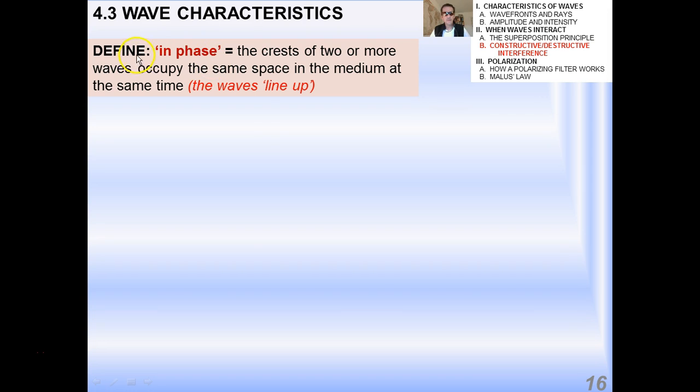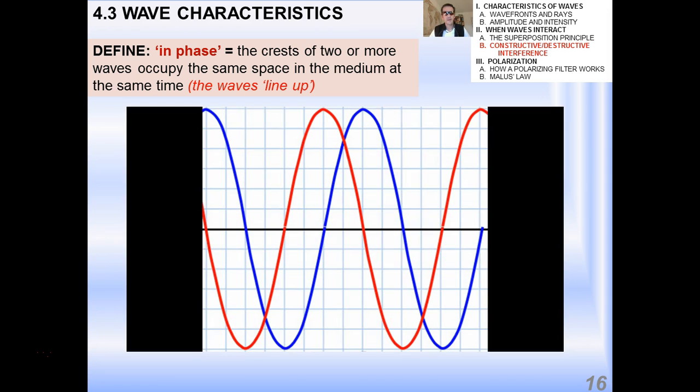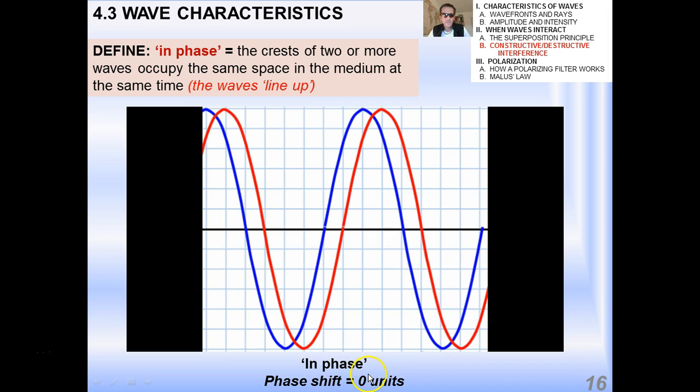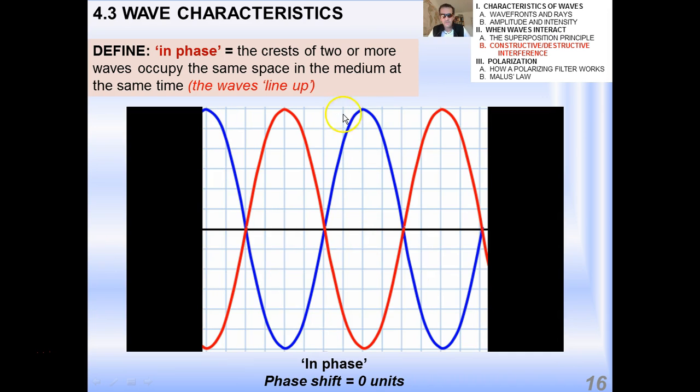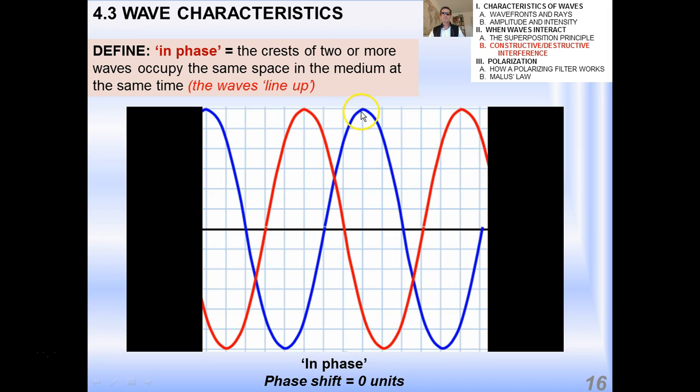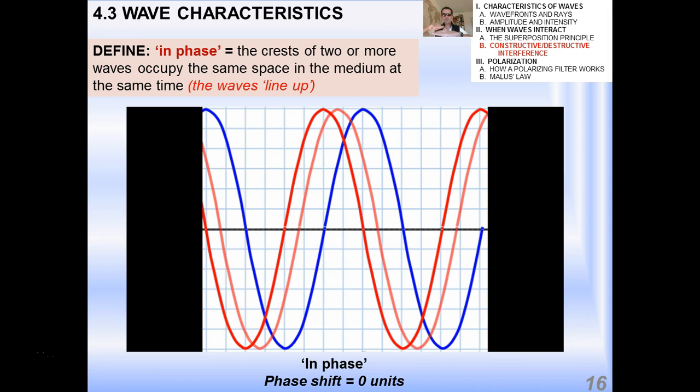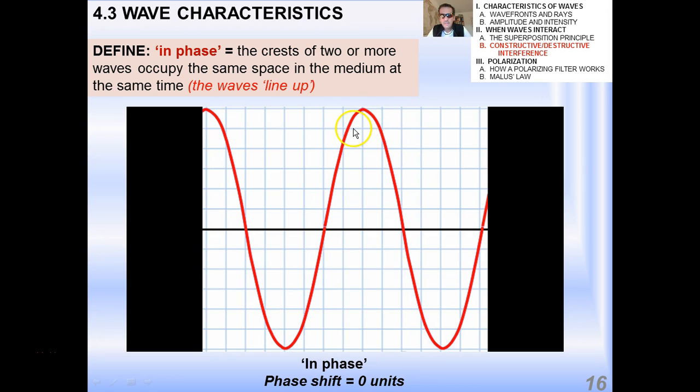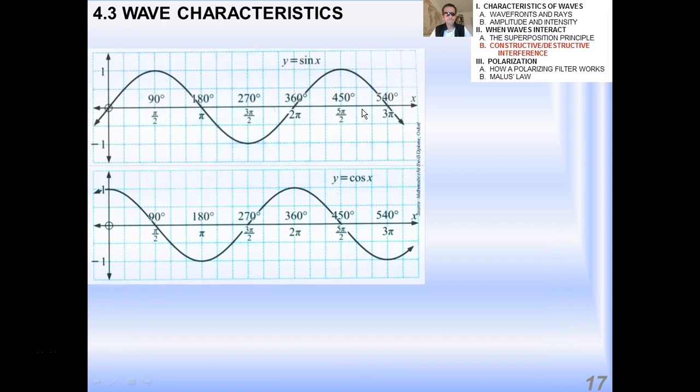Now when waves are in phase, the crests of two or more waves occupy the same place in the medium at the same time, and the waves line up. So again, if we move the red wave over to the right, you can see the phase difference gets less and less. Here the phase shift is zero units. When they're right on top of each other, you can see that at that instant of time, we would have a wave that's actually the same frequency, same speed, everything else, but it's going to be twice as high as it was before. And I guess because blue and red make purple, it'd be a purple wave.